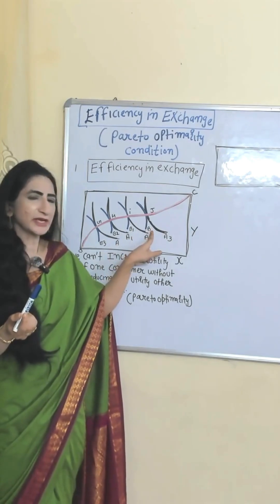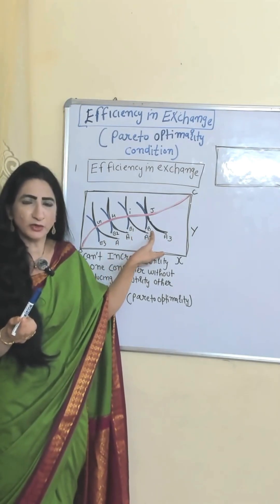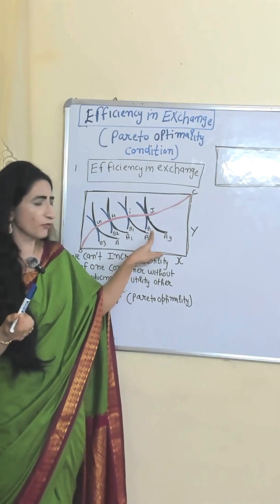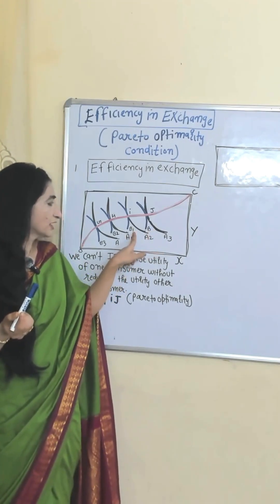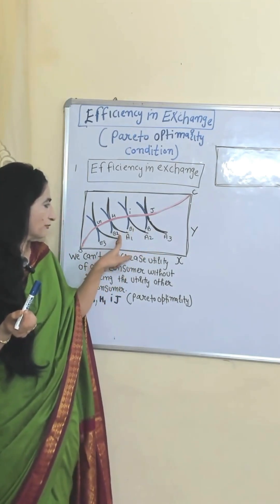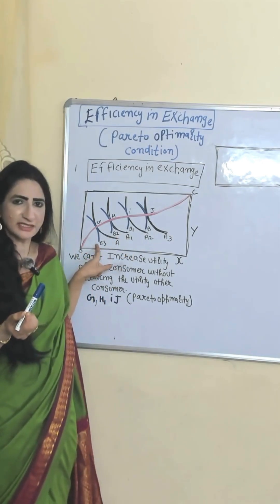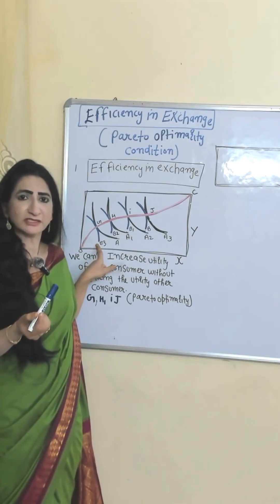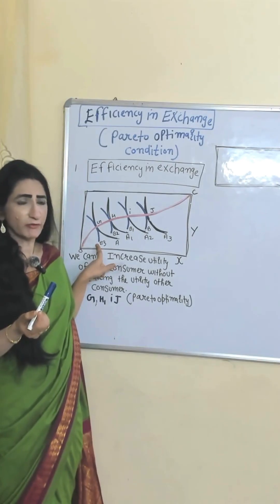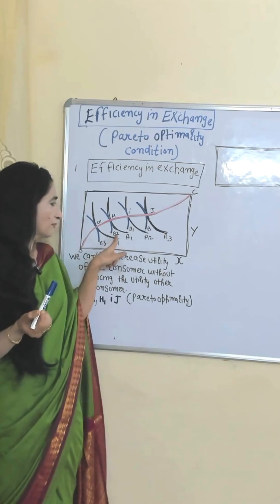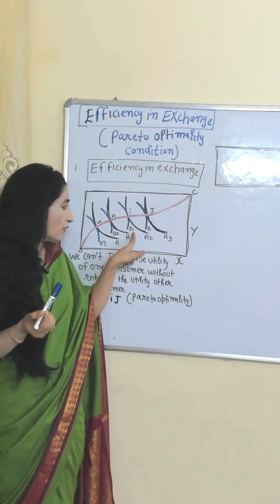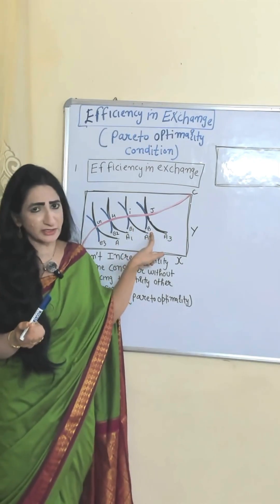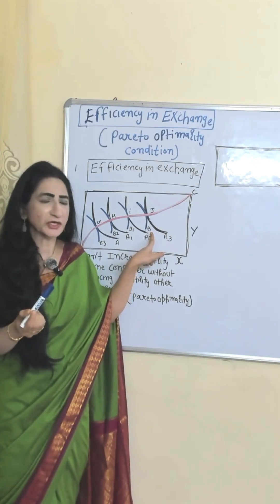The indifference curves of B start from here — the blue ones belong to B. As B moves from B to B1, B1 to B2, B2 to B3, his utility falls because a lower indifference curve gives lower utility. But as B moves back from B3 to B2, B2 to B1, B1 to B, his utility falls because a lower indifference curve gives lower utility.